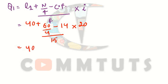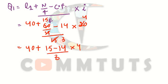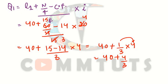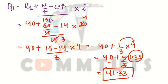Solving: 60/4 = 15, minus 14 = 1. Then 1/15 × 20 = 4/3 = 1.33. So Q1 = 40 + 1.33 = 41.33. The value of Quartile 1 is 41.33.